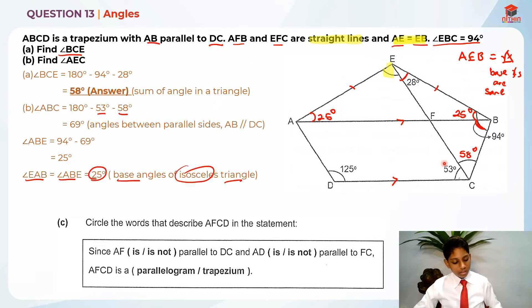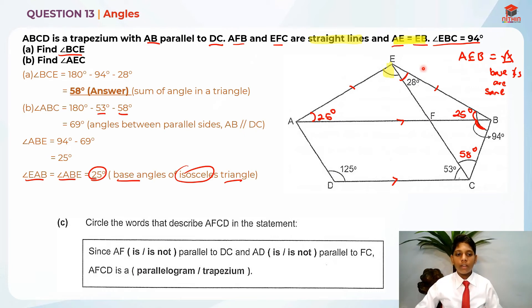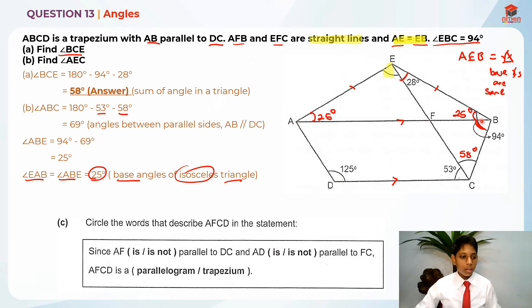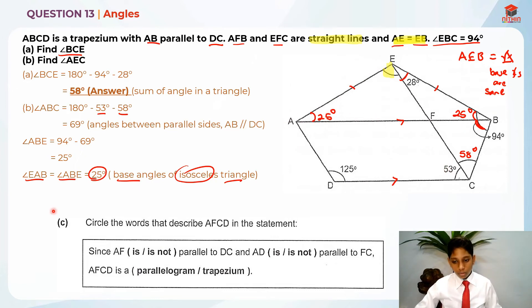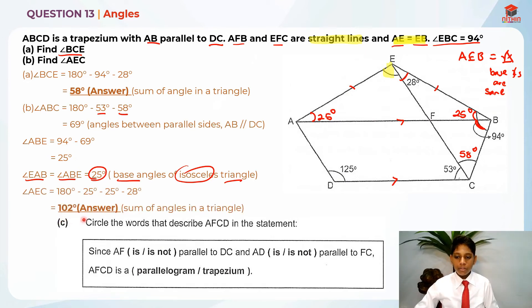Okay, next. Since we know the base angles, we take 180 degrees minus 28 degrees minus the two base angles which are 25 degrees each. So we take 180 degrees minus 25 degrees minus 25 degrees minus 28 degrees, which gives us the angle AEC as 102 degrees. This is because of the sum of angles in a triangle.